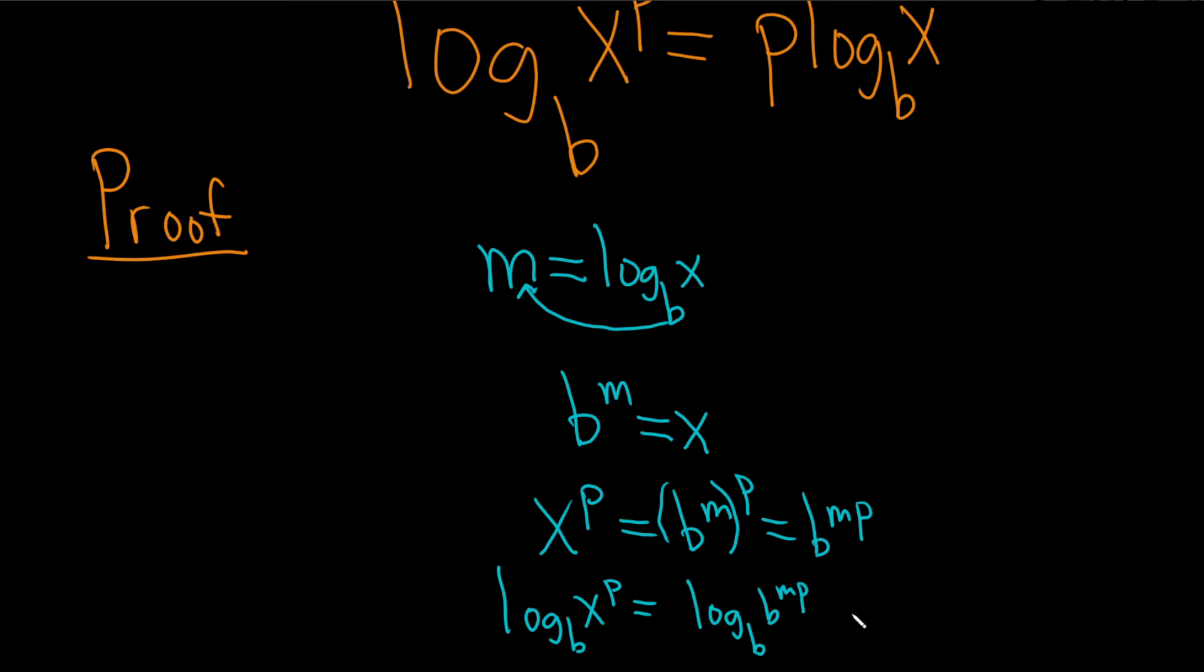These cancel, right, because we have two b's. So this is just mp, which is just, I'm going to write it as pm, which is the same thing as p log base b of x.